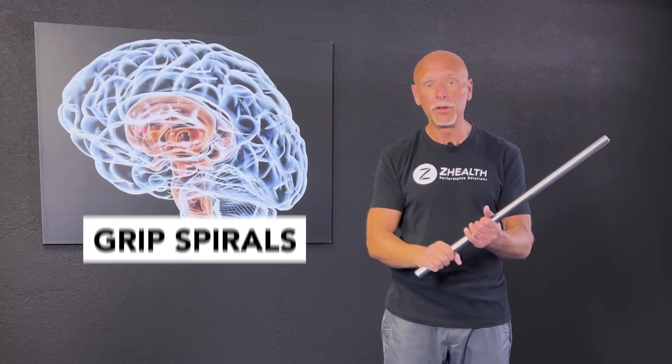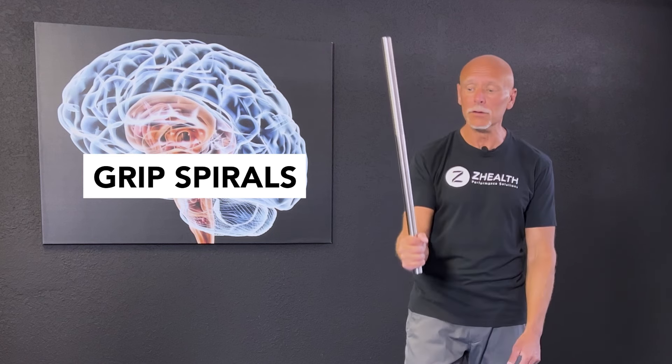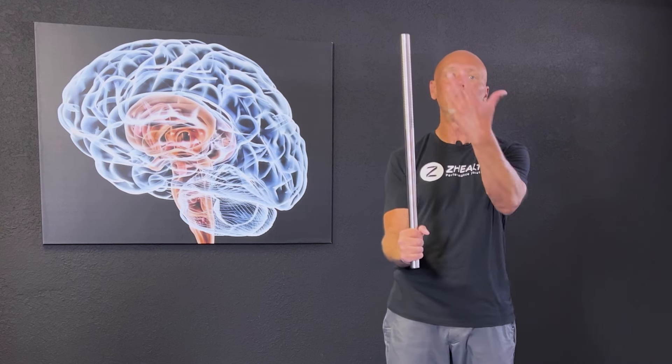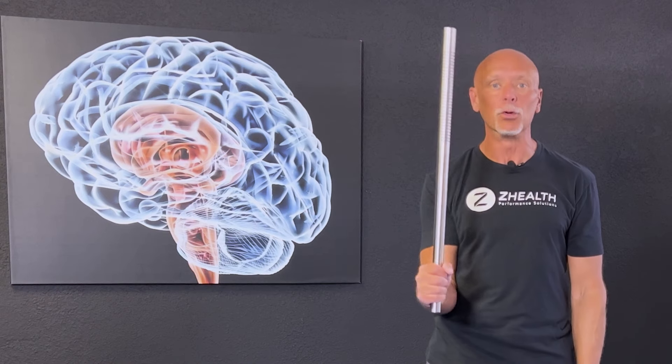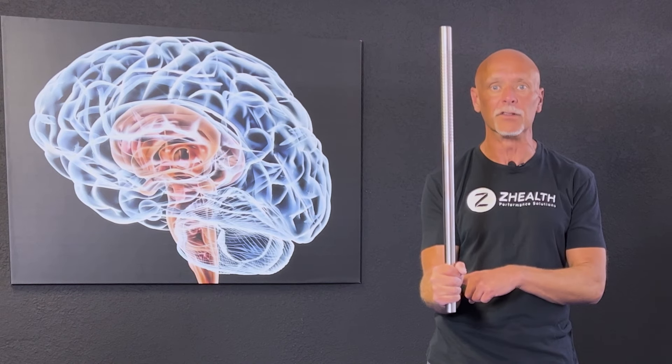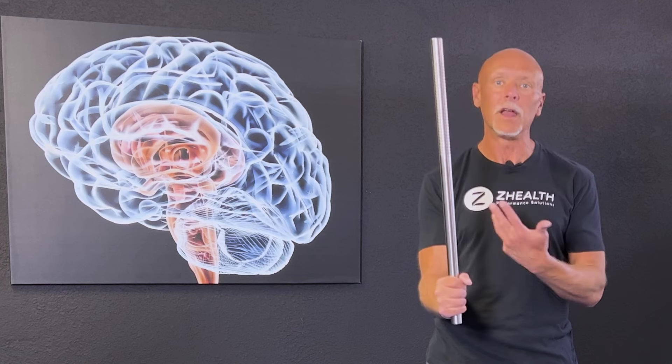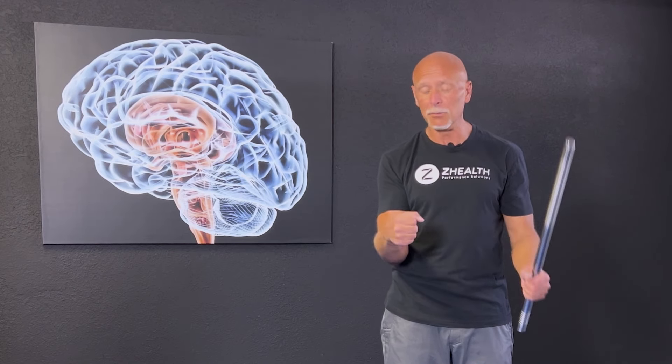This exercise is called grip spirals. So what I'm going to do, I'm going to take a club, a stick, something that's going to give me just a little bit of resistance. This is about a two pound metal club that I like to use for this particular exercise. You can go much heavier as you get stronger. But honestly, in the beginning, most people don't need anything more than like a paper towel roll or something very light